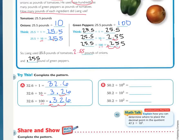For part B, remember that 10 to the zero is the same as 1 — a ten with no zeros. Then 10 to the first has one zero, so that's 10. And 10 to the second would have two zeros. Press pause and fill out B.